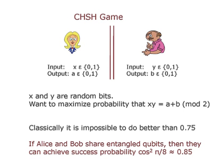On the other hand, if Alice and Bob share entangled qubits, they can achieve a success probability of cosine squared π/8, which is about 0.85. This is essentially what's called the Bell inequality — classically, or under any local theory of a certain kind, you can't do better than 0.75. Quantum mechanics predicts this much larger value and it has been verified.